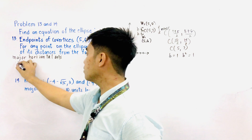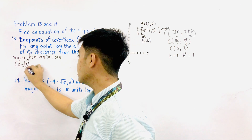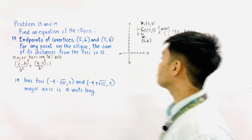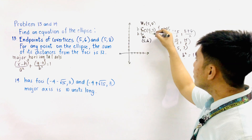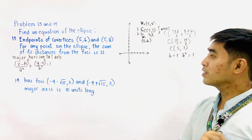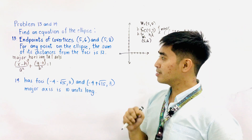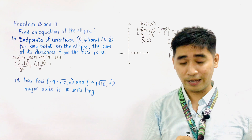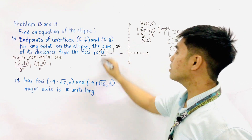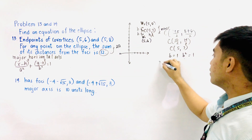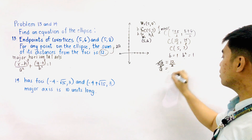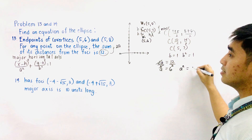If we have a major horizontal axis, the formula we will use is: (x − h)²/a² + (y − k)²/b² = 1. We now have b squared and we have h and k, but we do not yet have the value of a squared. The second condition states that for any point on the ellipse, the sum of its distances from the foci is 12. This is just equal to 2a. So 2a = 12, therefore a = 6, and a squared = 36.